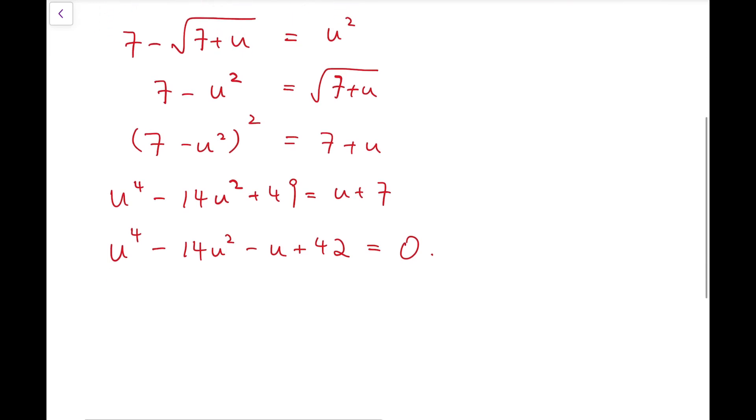Now, to solve this quartic polynomial, we might have to try some constants, and see whether we replace u by that particular constant, and whether we'll have left-hand side to be equal to 0. If so, then by factor theorem, we'll be able to factorize the quartic polynomial. So, in fact, notice that 2 to the power 4 minus 14 times 2 squared minus 2 plus 42 is actually 16 minus 56 minus 2 plus 42, and that's 0. And furthermore, if we test minus 3 to the power 4 minus 14 times minus 3 squared minus minus 3 plus 42, and that's 0.